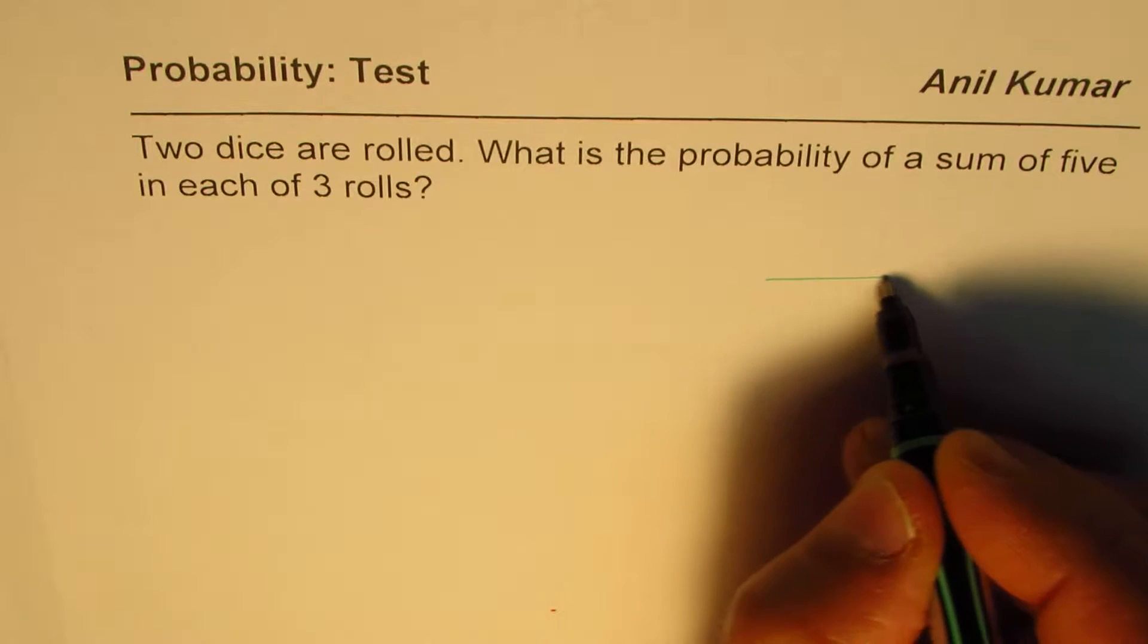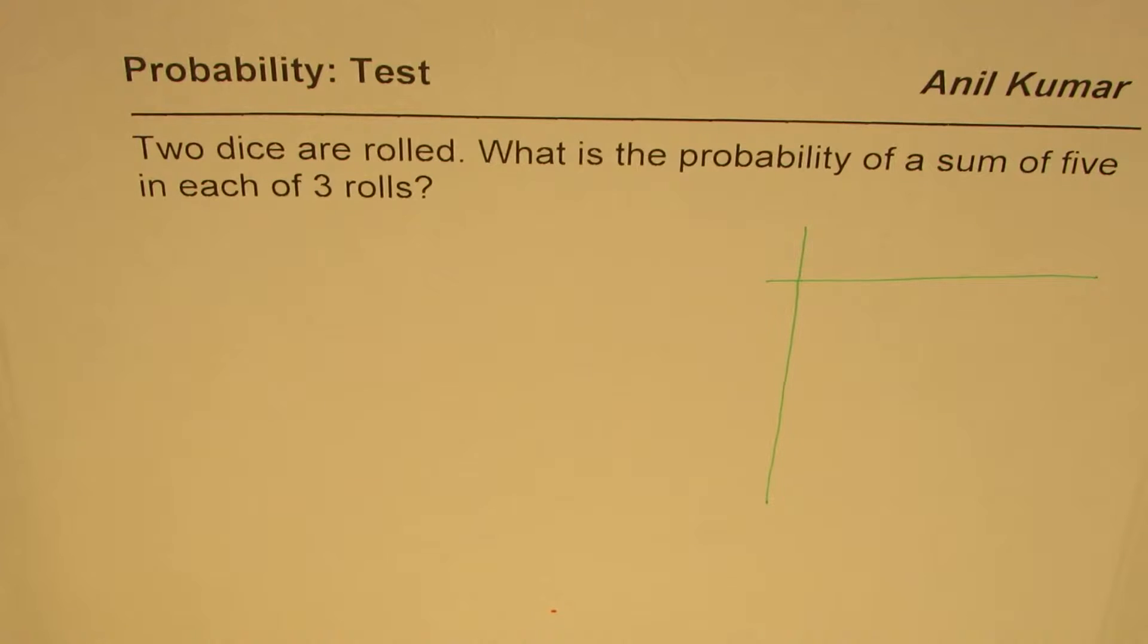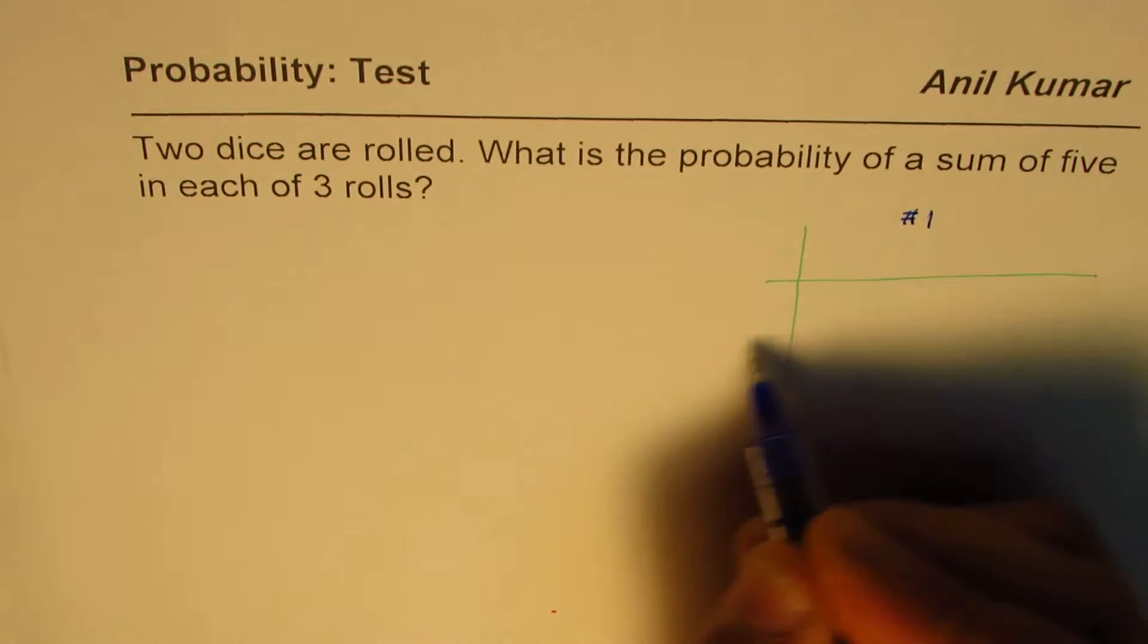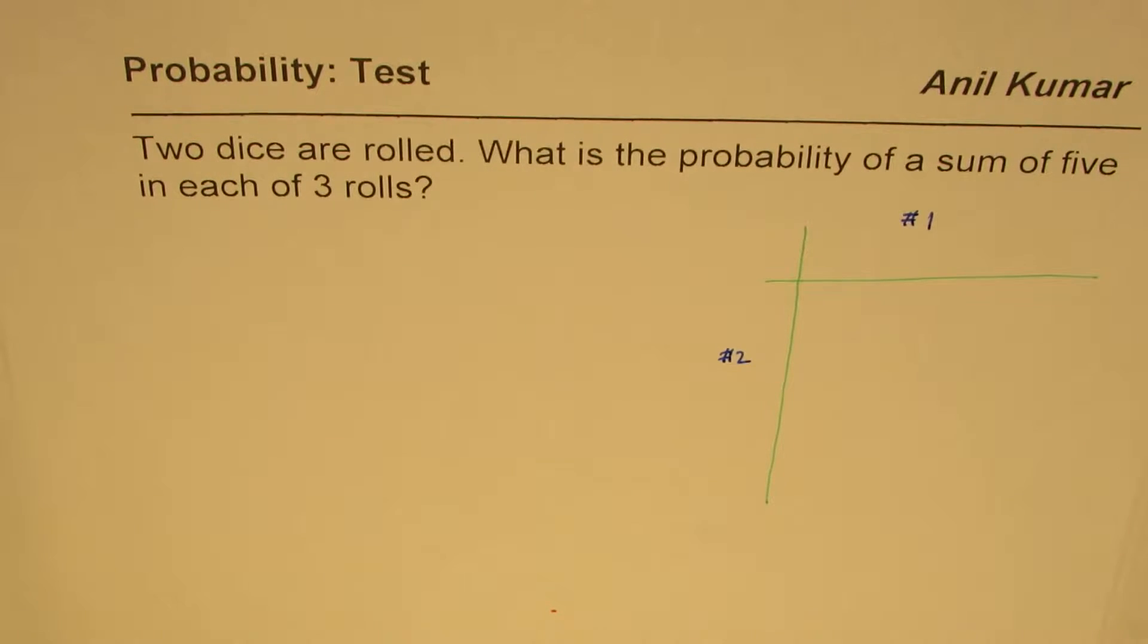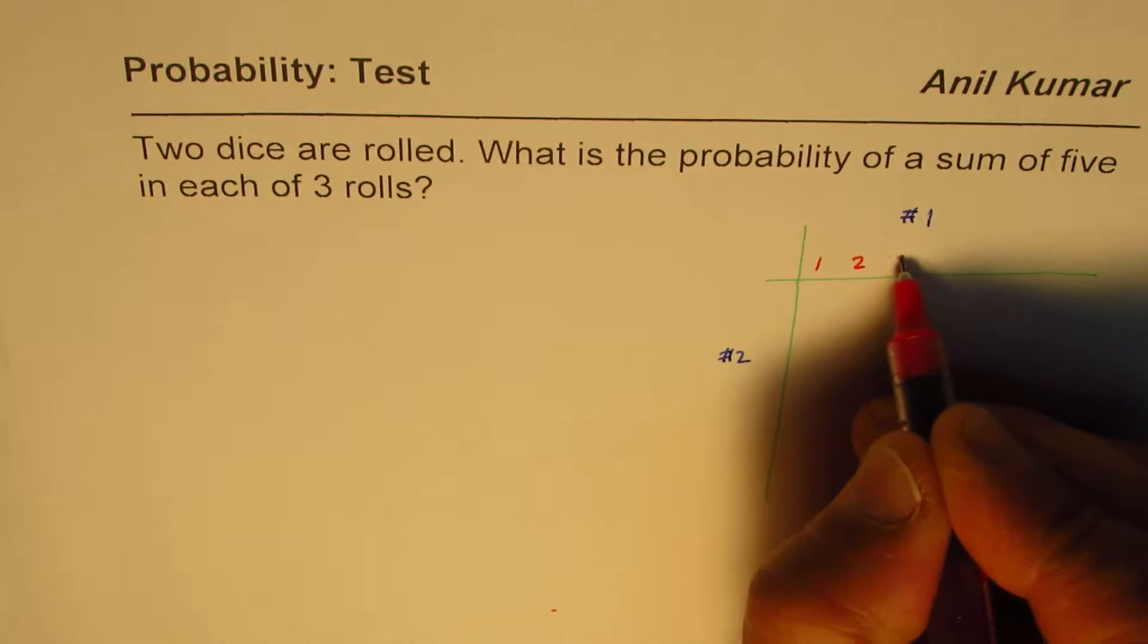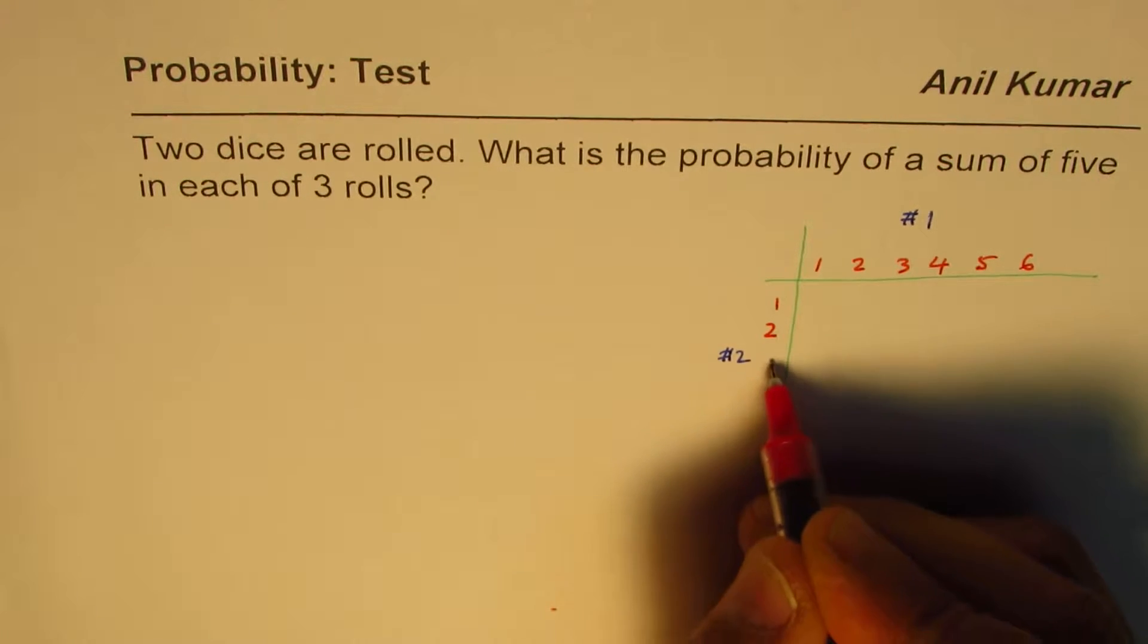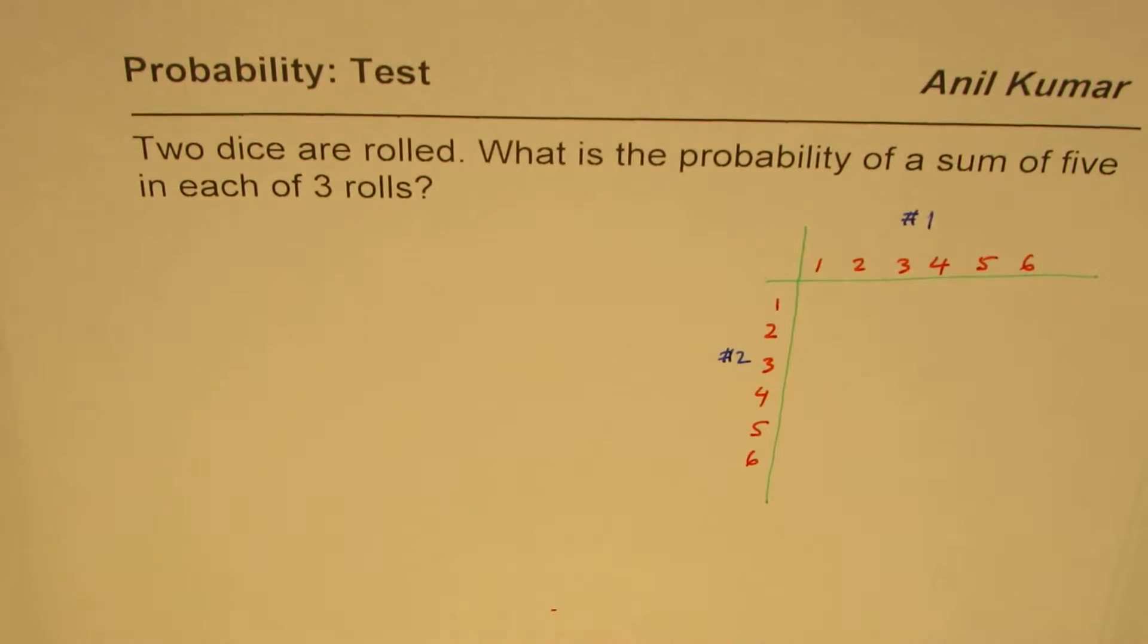That's the question for you. You can pause the video and answer the question. What we're trying to say here is that let's say this is our die one, this is die number two. They are both rolled so you could get numbers like one to six. One, two, three, four, five, six on each die.